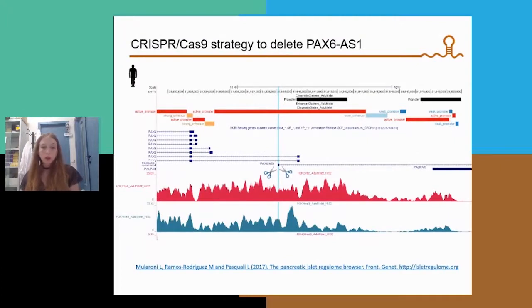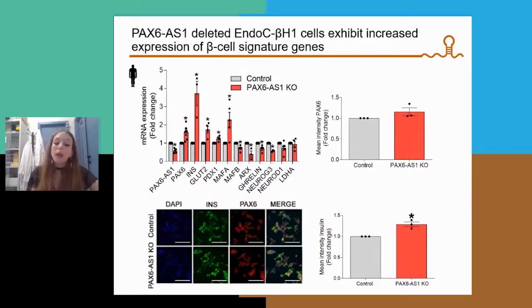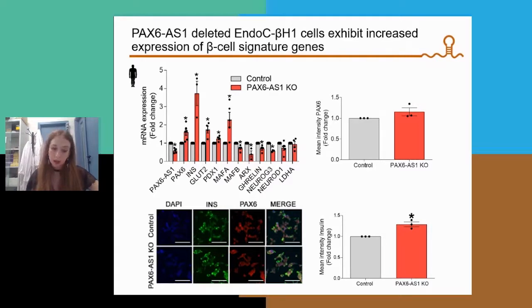To further determine the impact of this lncRNA in human beta cells, we deleted the first exon of the lncRNA using CRISPR-Cas9 technology in EndoC cells. Using this approach, we developed two different populations of EndoC cells displaying a 45% reduction in Pax6-OS1 expression. These cells also showed an increase in mRNA levels of Pax-6, insulin, and other beta cell signature genes, while ghrelin and other genes typical of other endocrine cell lineages were downregulated.